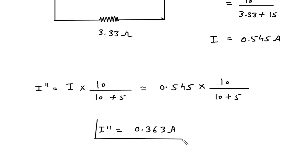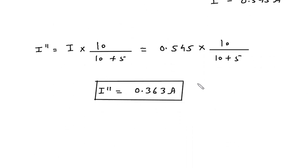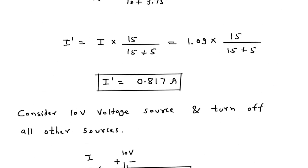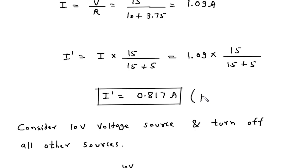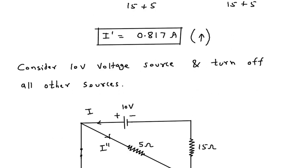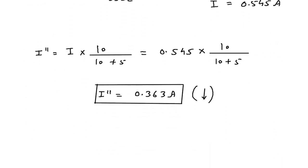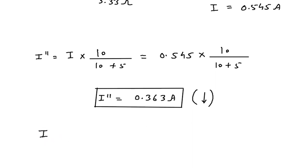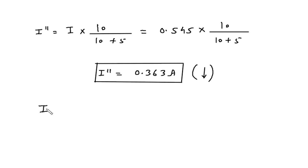Now the direction for I double prime is downward, while the direction for I prime is upward. Both current directions are opposite to each other. So we will subtract the higher current minus the lower current. We are doing subtraction because the current directions are opposite.